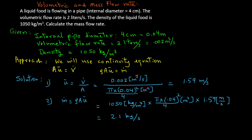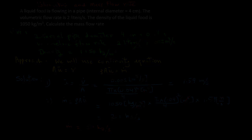Carrying out the calculation, the mass flow rate m-dot is 2.1 kilograms per second. In this problem we have seen how to convert volumetric flow rate into mass flow rate. You can also do the reverse: if you are given a mass flow rate, you can convert that into volumetric flow rate.